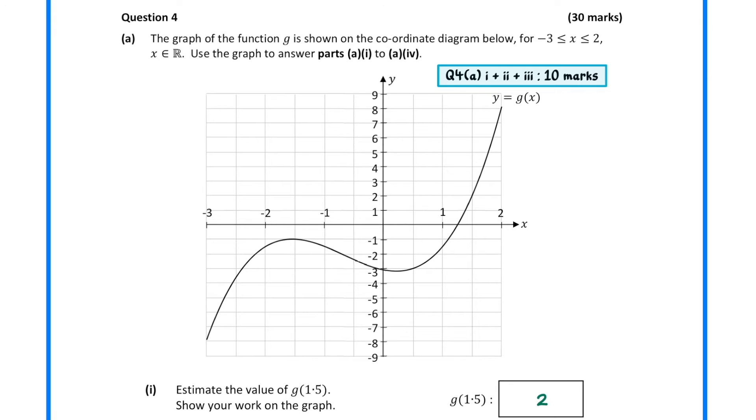In question 4a, we are given the graph of a function g. In part 1, we must estimate the value of g(1.5). To do this, we draw a vertical line at x equals 1.5, and then draw a horizontal line where it meets the curve. This gives us an answer of 2.